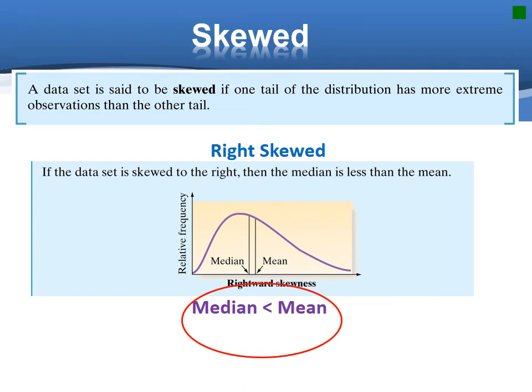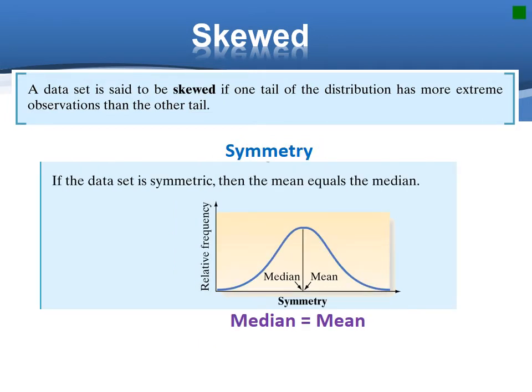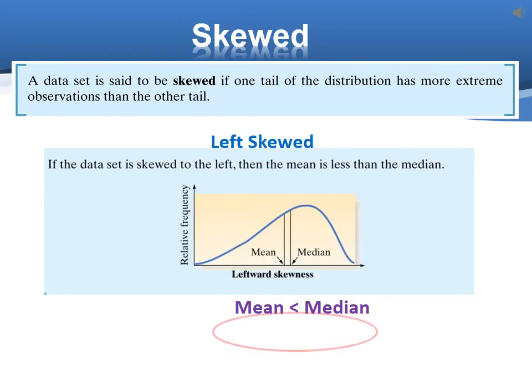Sometimes, the dataset will be skewed if one tail of the distribution has more extreme observations than the other tail. If the mean is on the right side of the median, we say that it is right skewed. That is, mean is larger than the median. If the mean is on the left side of the median, we say that it is left skewed. That is, mean is smaller than the median.